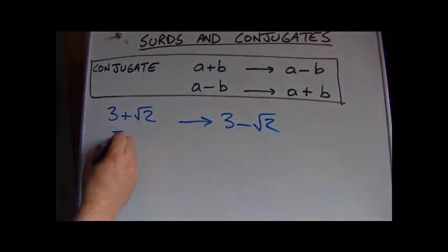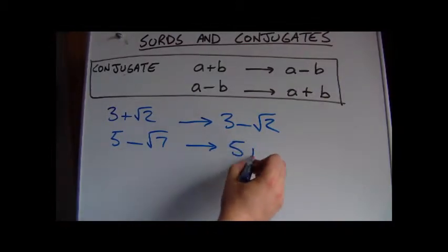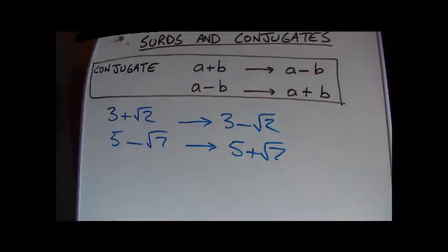5 minus root 7, the conjugate of that is 5 plus root 7.